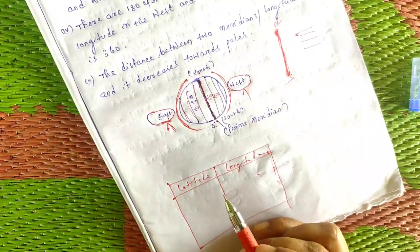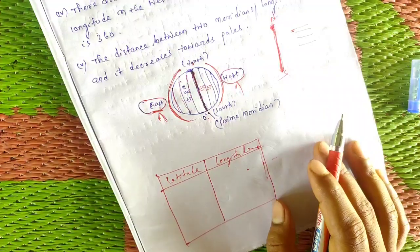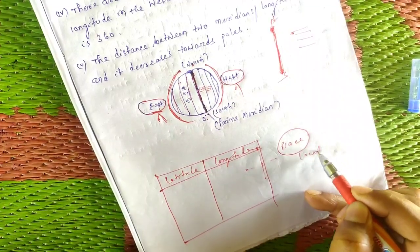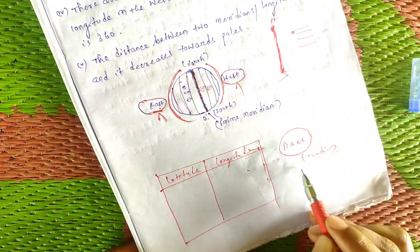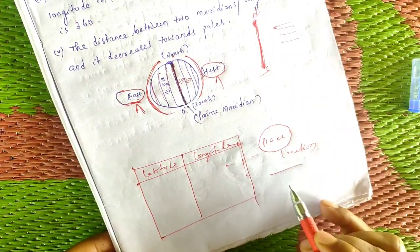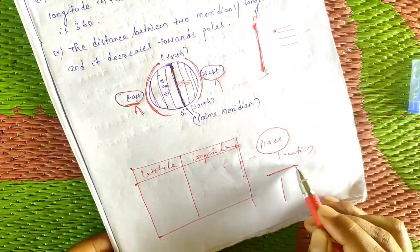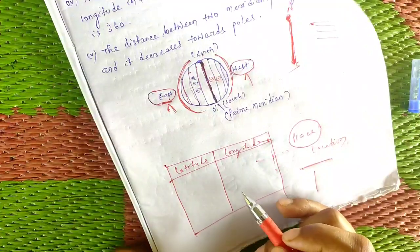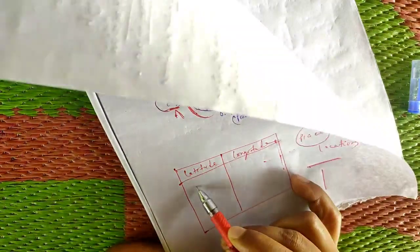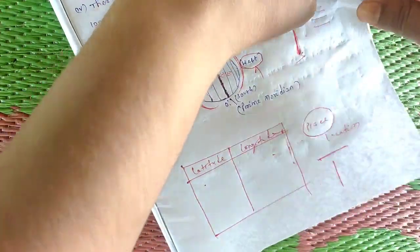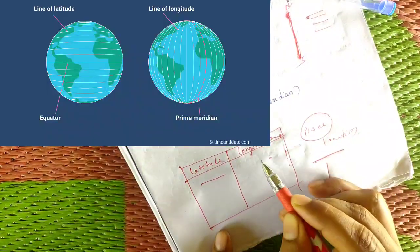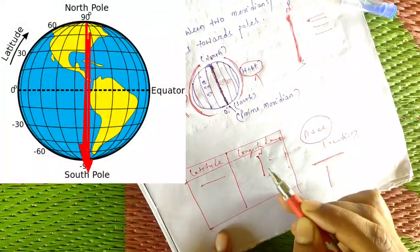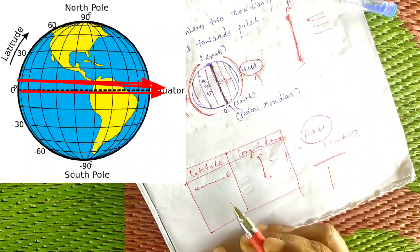To summarize, latitude and longitude are used to locate a place. Latitude lines run parallel from west to east, while longitude lines run from the north pole to the south pole — north to south. Together they form a grid to identify any location on earth.